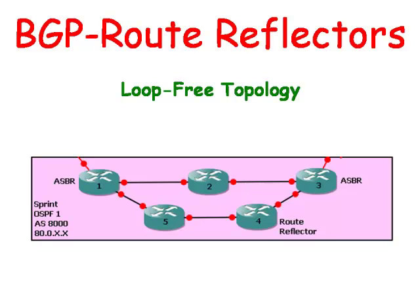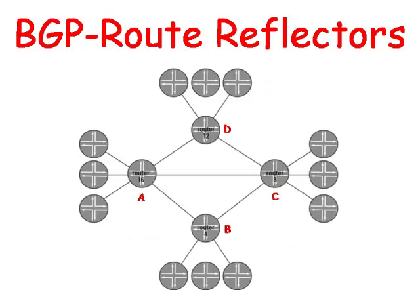The central hub is called the Route Reflector. We could even section off routers and create a hierarchy of BGP Route Reflectors. A number of Route Reflector clients would be connected to a Route Reflector, and the Route Reflector would be connected to other Route Reflector clients.